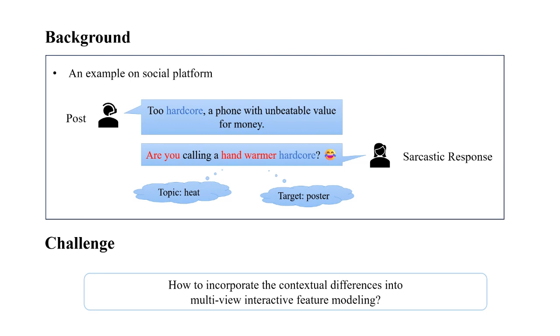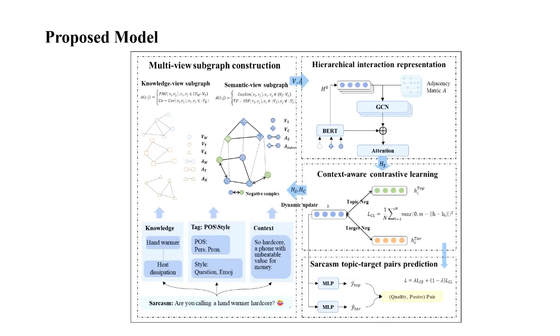Analyzing the topics and targets can explain the deeper reasons of users' dissatisfaction, which may improve product development and enhance customer satisfaction. This paper proposes a heterogeneous information network fused with context-aware contrastive learning method for sarcasm topic-target pair identification.